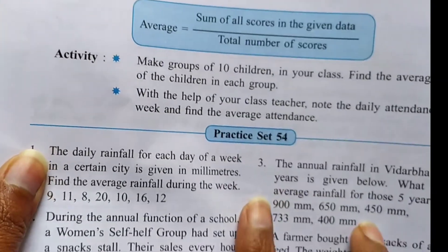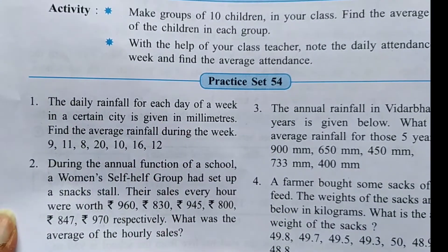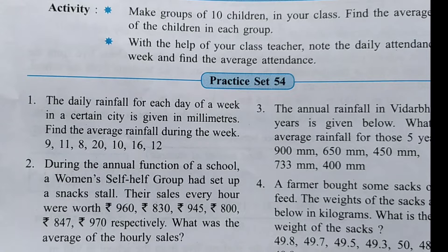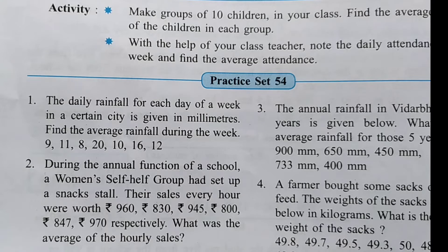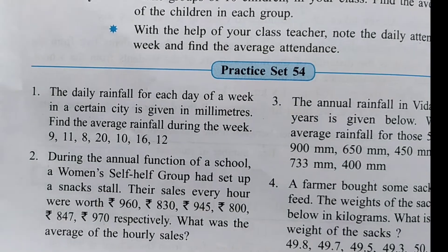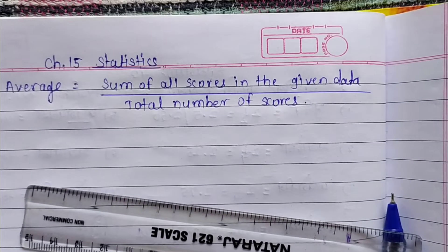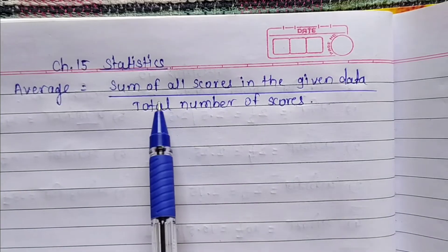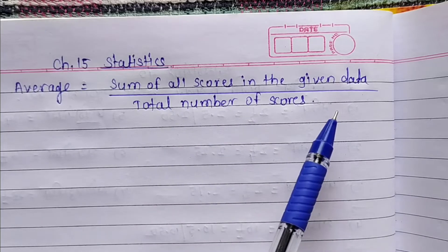Here is Practice Set 54. In this practice set we have totally four questions and we are going to solve them one by one. Before we start, we should know the formula for how to find out the average, because this practice set is based on average. The formula is: average is equal to sum of all scores in the given data divided by total number of scores.